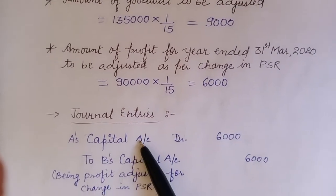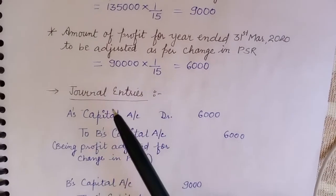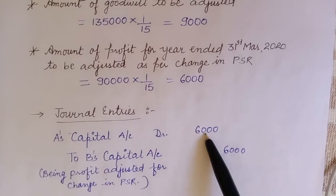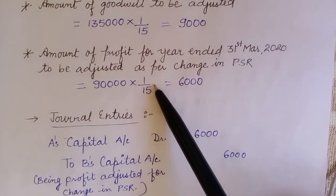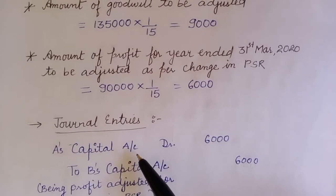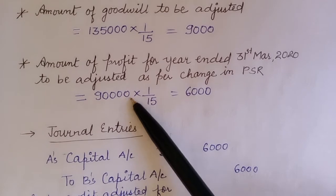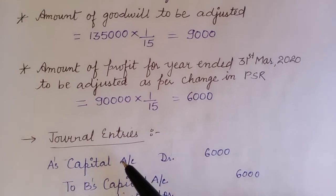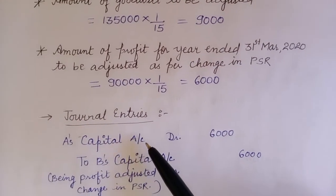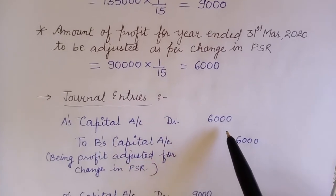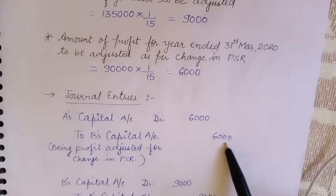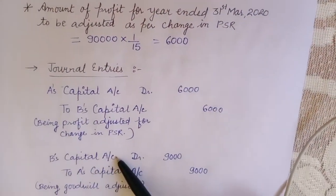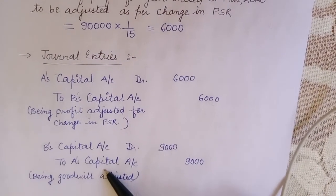In the journal entry, A's capital account is debited and B's capital account is credited for ₹6,000. This is the adjustment of profits — the sacrificing partner is debited because A would have received more profit when it was distributed in the old ratio 2:1, though it should have been distributed 3:2. So A got excess profit, hence A's capital account is debited by ₹6,000 and B's capital account is credited ₹6,000.